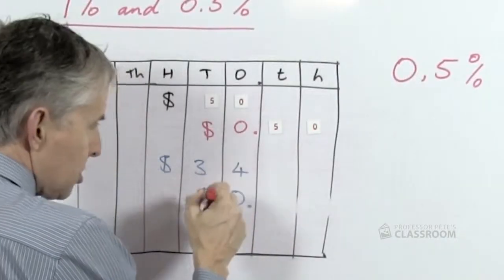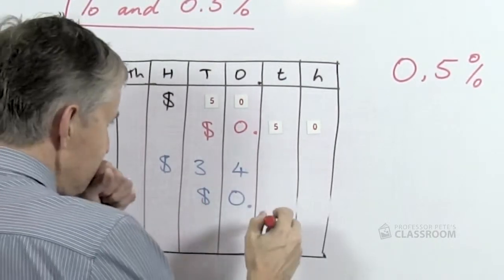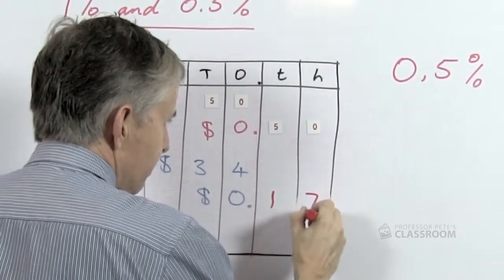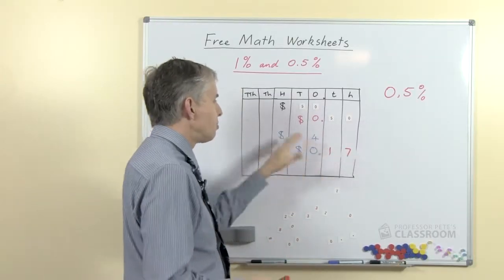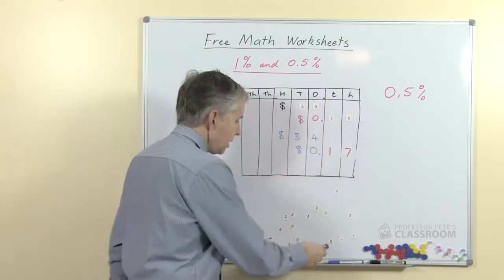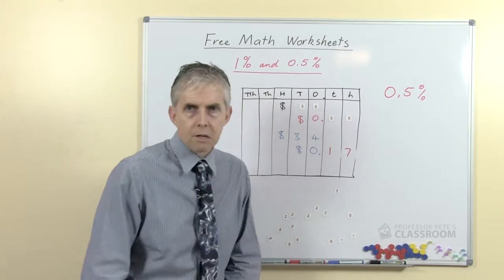So for example with our example of thirty-four and converting that or rather multiplying it by half a percent, a good student will see that half of thirty-four is seventeen and one percent, well one percent of thirty-four is thirty-four cents, half of that is seventeen cents and so that's the result.